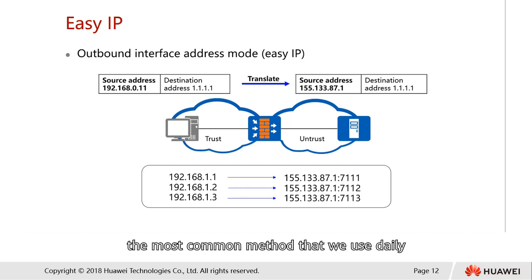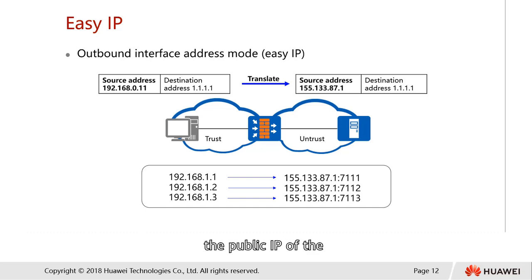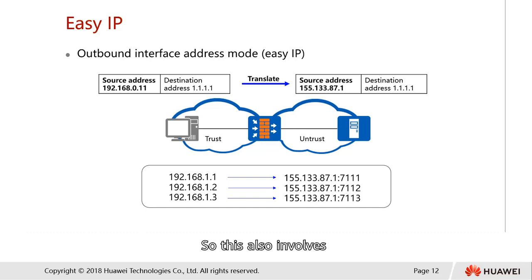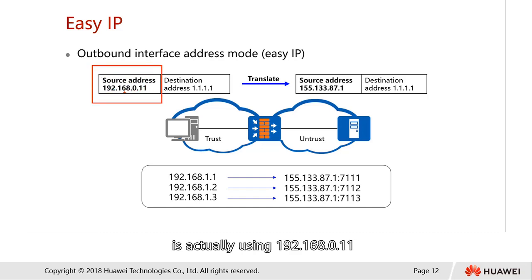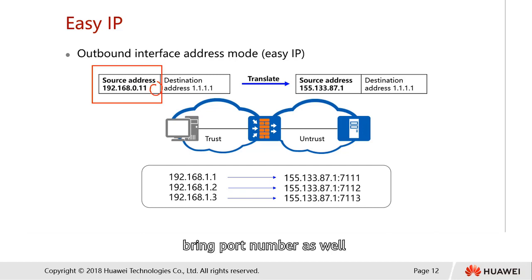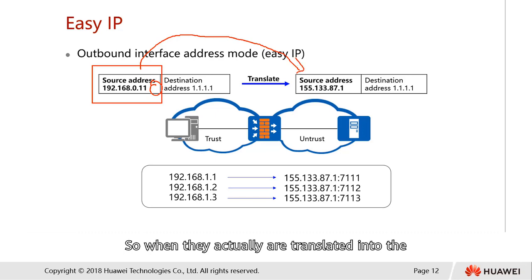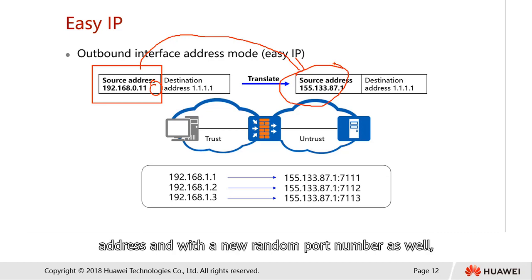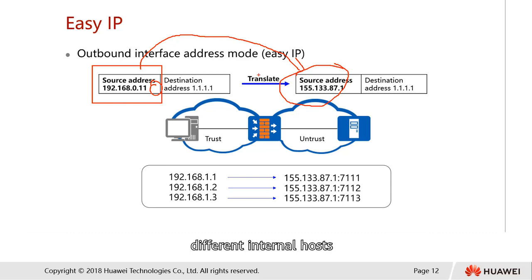Next, we have Easy IP — the most common method used nowadays. For Easy IP, or outbound interface address mode, this is the idea of using the public IP of the outbound interface of our firewall. This also involves port address translation. The trusted host at 192.168.0.11, when translated, will carry a port number and obtain a new source address with a new random port number to indicate it is coming from the internet. The destination address never changes.